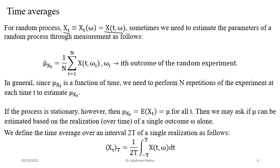Sometimes we need to estimate the parameters of the random process through measurement. One simplest estimate: suppose you are willing to estimate the mean function, so you measure the process value for different outcomes and then average it out for a sample size n. That gives one estimate of the mean function — it would be a function of time. This approach is a bit complicated since the mean function is a function of time and we need to repeat the random experiment at each time instant. There is another approach when dealing with a stationary random process, where the mean function happens to be constant — time independent.